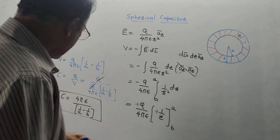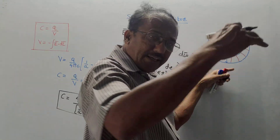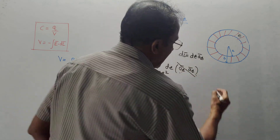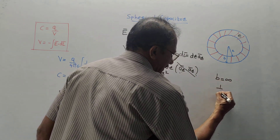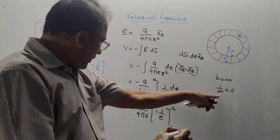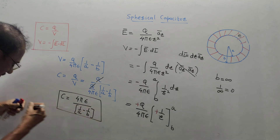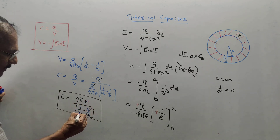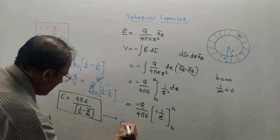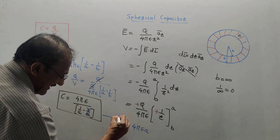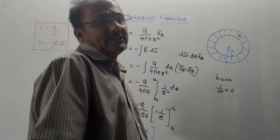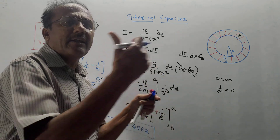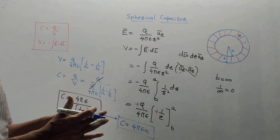There is one more special case: if the outer sphere is at infinity — for example, a sphere resting on the surface of the earth — then b = ∞. Since 1/∞ = 0, the term 1/b vanishes. The equation simplifies to C = 4πε / (1/a) = 4πεa. This is the capacitance of an isolated spherical capacitor.